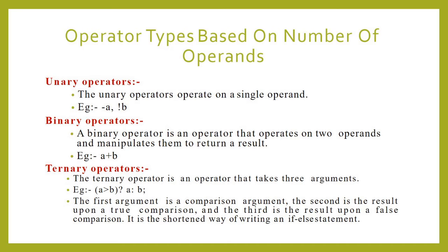Binary operators. A binary operator is an operator that operates on two operands and manipulates them to return a result. Examples: a plus b, x into y, m minus n, etc.